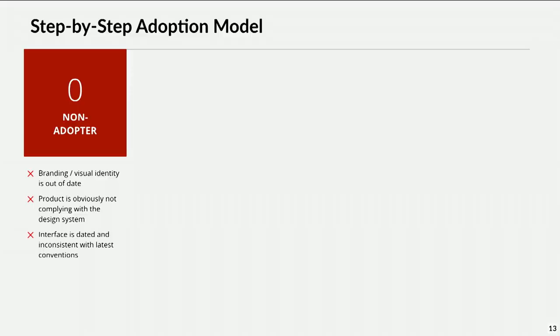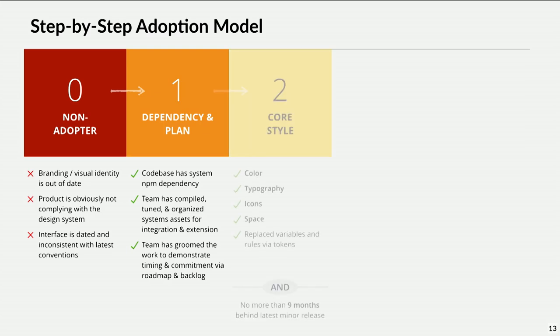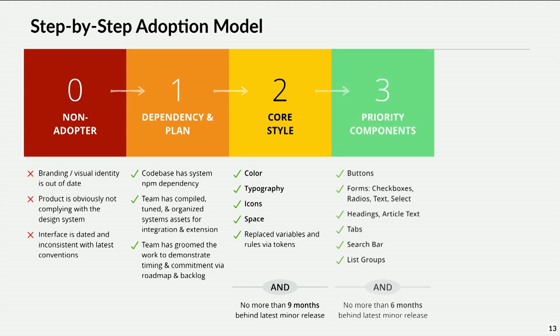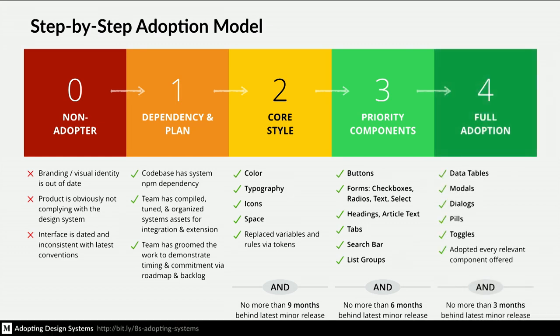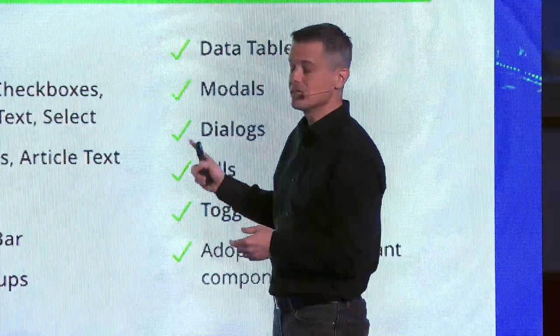So we create models. For better or worse, everyone starts as a non-adopter — they haven't used the system before. The next step isn't hello world in production; it's understand the system, develop a plan, and maybe as a good faith gesture, start to invoke the code in your own system. Then you adopt the core visual style, start to adopt all those little atomic primitive elements — buttons, inputs, maybe a basic data table — ultimately getting to full adoption of an entire component library. These models vary across different teams, but the progression is similar — it's a maturation of your adoption of a design system.